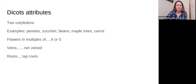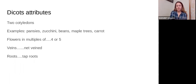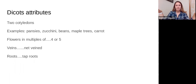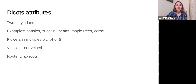Dicot attributes: they have two cotyledons. Examples include pansies, zucchini, beans, many kinds of trees, and carrots. Their flowers are in multiples of four or five. Their veins are net-veined — branched out, like the veins in your wrist or like a maple leaf. They also have tap roots, which go a little deeper rather than spreading out at the surface level.